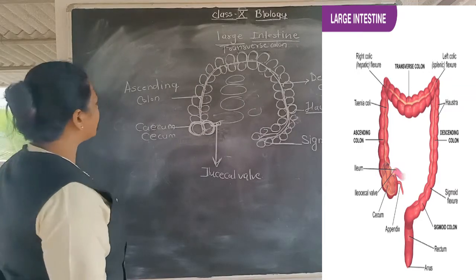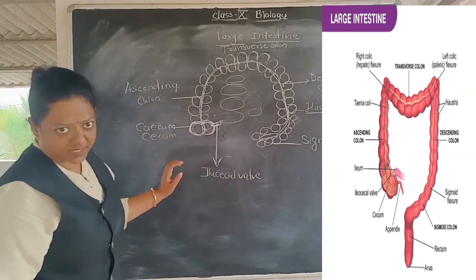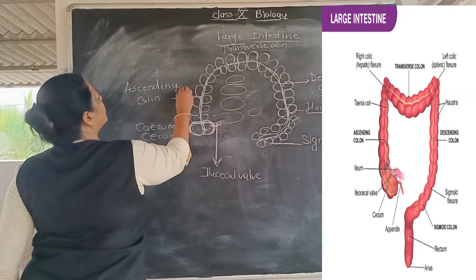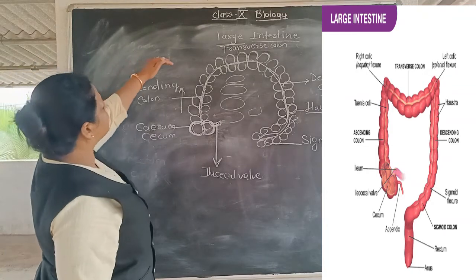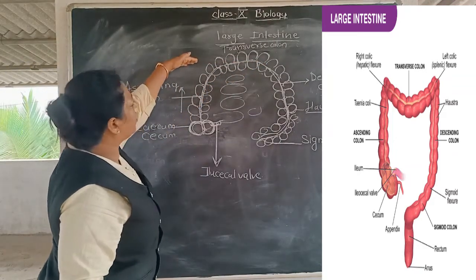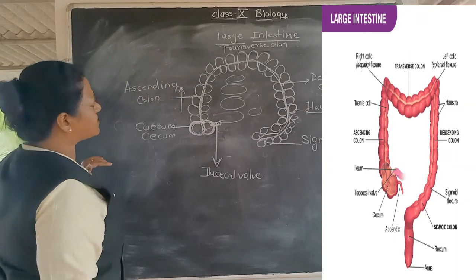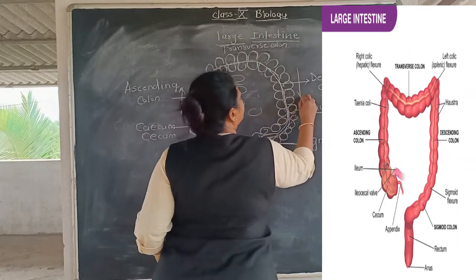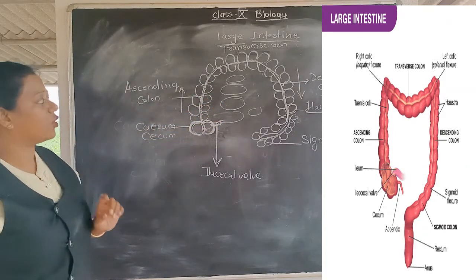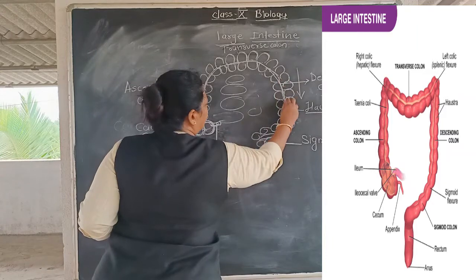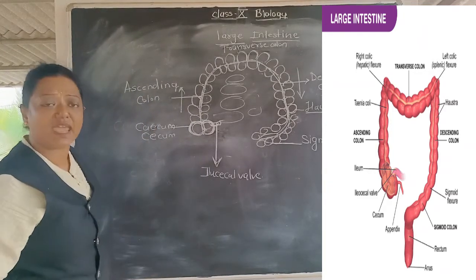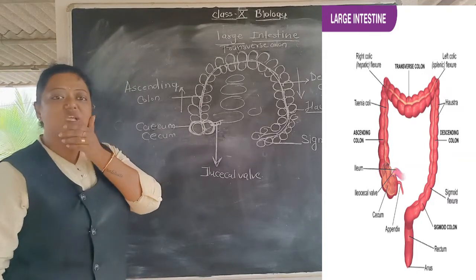To summarize the colon pathway: undigested food particles enter the ascending colon moving upward, then move horizontally through the transverse colon, then come back down through the descending colon, and finally reach the sigmoid colon. The sigmoid colon gets its name simply because of its S-shape. This is the pathway of the colon.